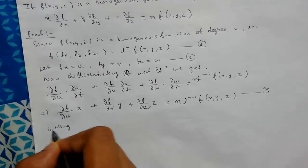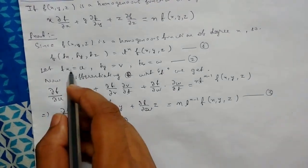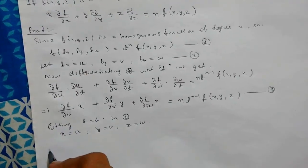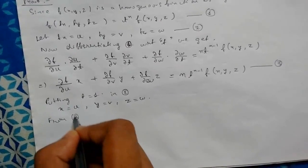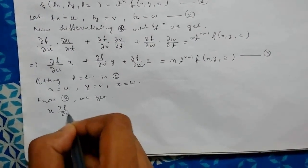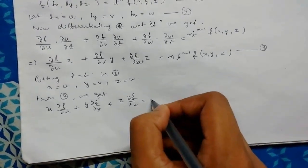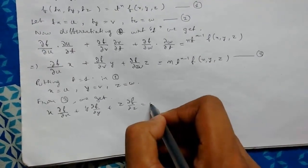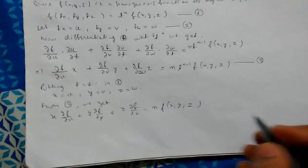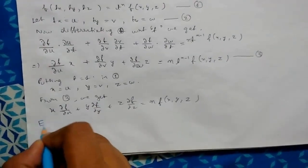Now putting t equals 1 in equation two, we get u equals x, v equals y, and w equals z. Therefore from equation three we get x del f del x plus y del f del y plus z del f del z equals 1 to the power n times n times f of x, y, z, which equals n times f of x, y, z. So Euler's theorem is proved.